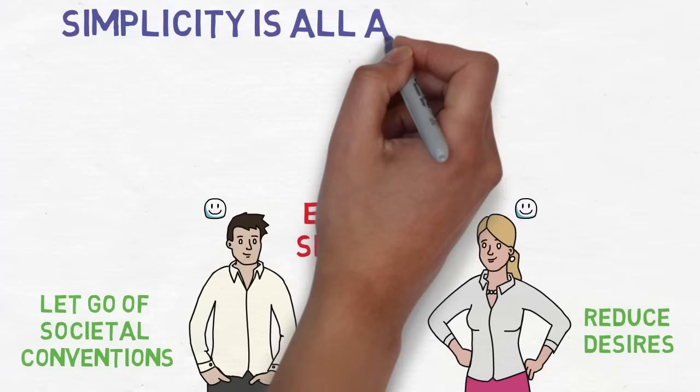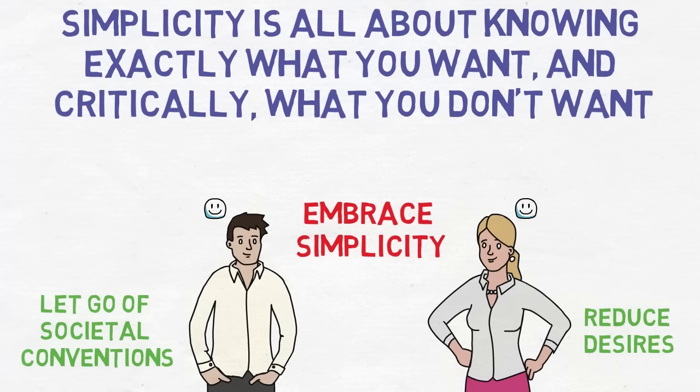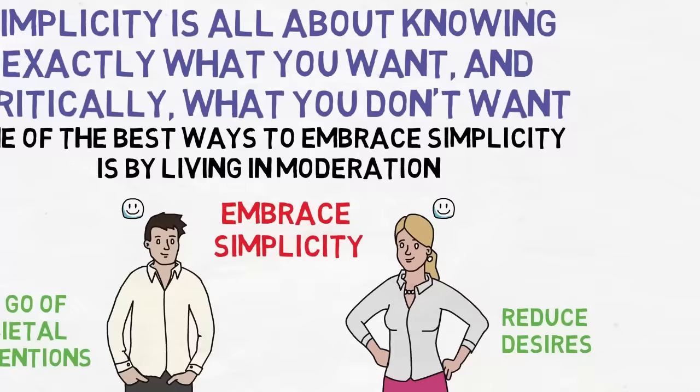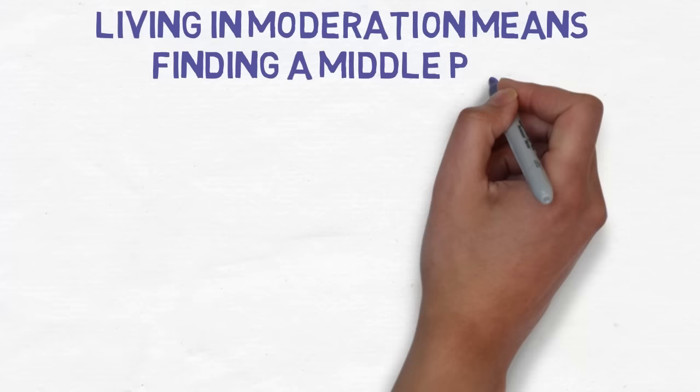Simplicity is all about knowing exactly what you want, and critically, what you don't want. One of the best ways to embrace simplicity is by living in moderation. Living in moderation means finding a middle path, one that avoids extremes and instead seeks balance and harmony.